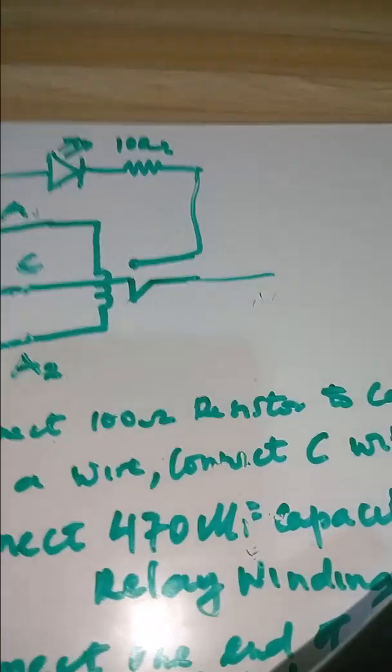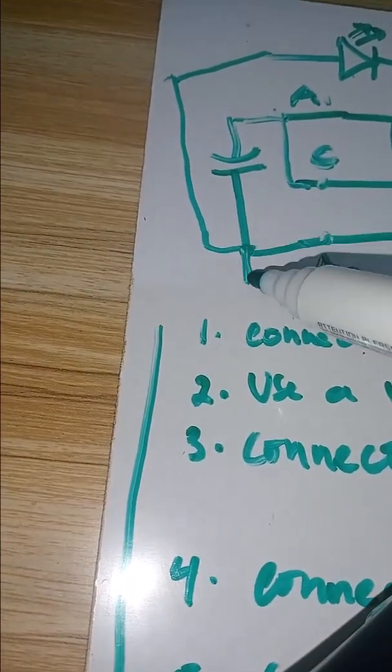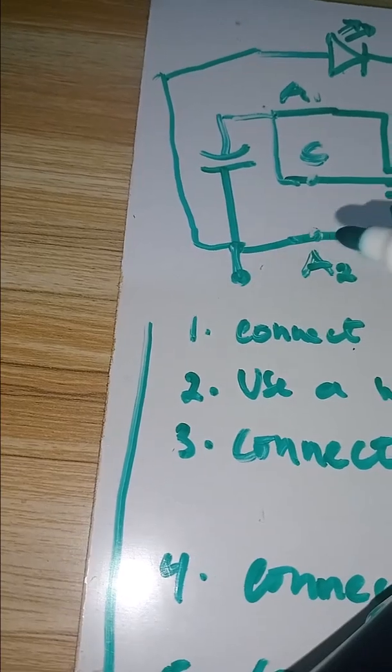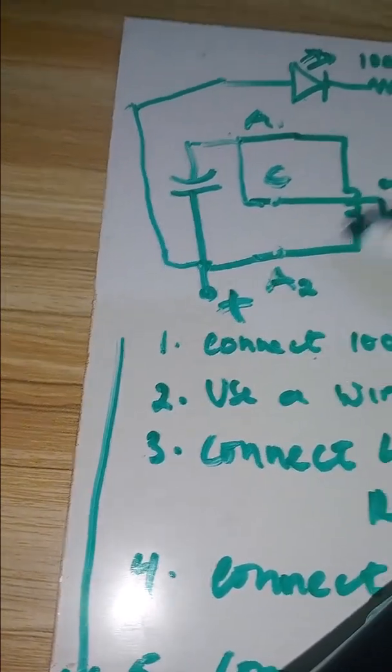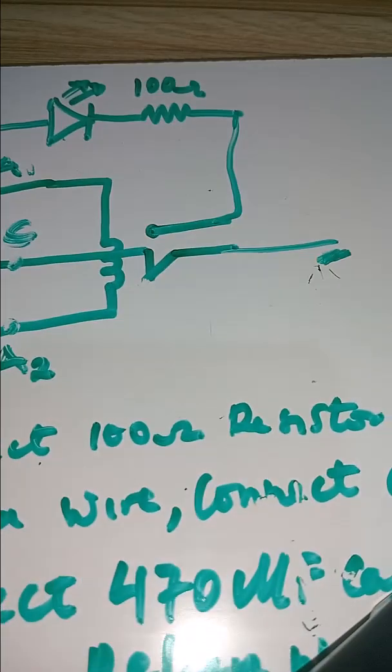The last step will be to connect the negative lead of the power supply to the normally closed contact of the relay, and then the positive to the positive terminal of both the capacitor and LED. And once that is done, you are ready to go, and you will have this setup.